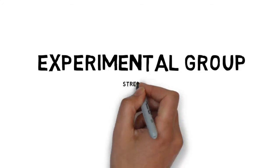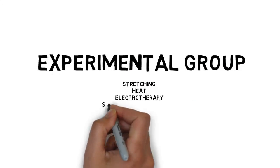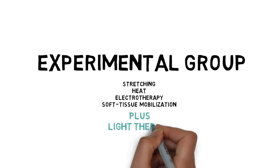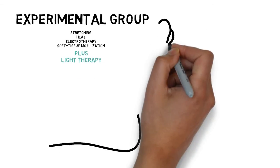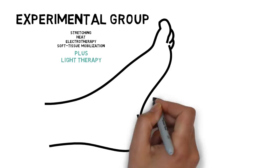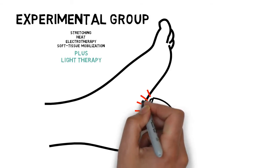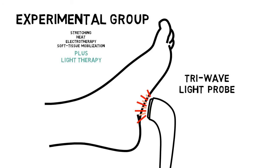The experimental group received the same treatment as the control group with the addition of light therapy. Each patient in the experimental group received a combination of red and infrared light delivered with the Dynatron TriWave Light Probe.